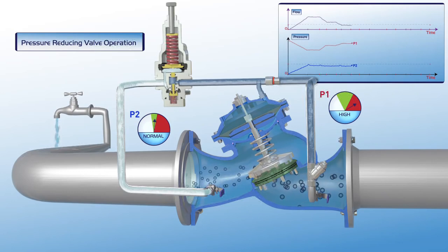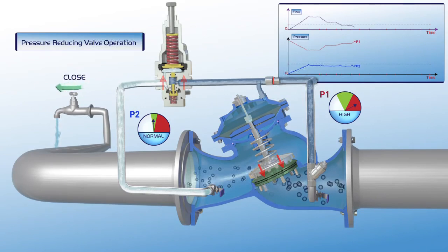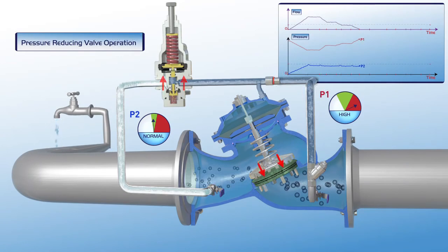Further reduction in demand for water, right down to zero demand, results in full closure of the valve. As presented on the chart, when the flow is zero, the upstream pressure is very high, and although the valve is closed, the downstream pressure remains stable at its designated set point.